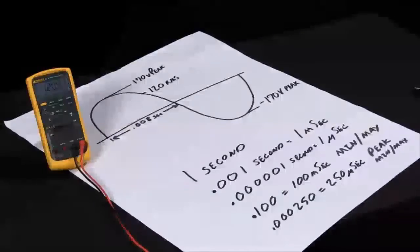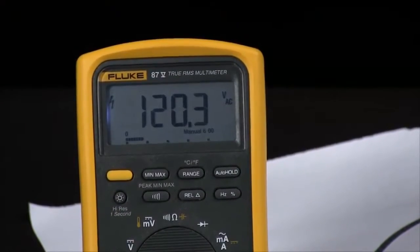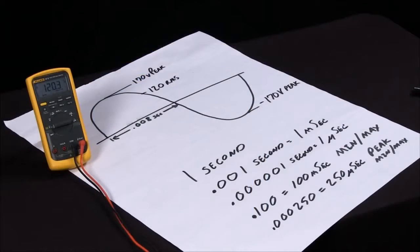What is peak min max on my Fluke 87 multimeter and how do I use it? The Fluke 87 has a unique capability called peak min max.